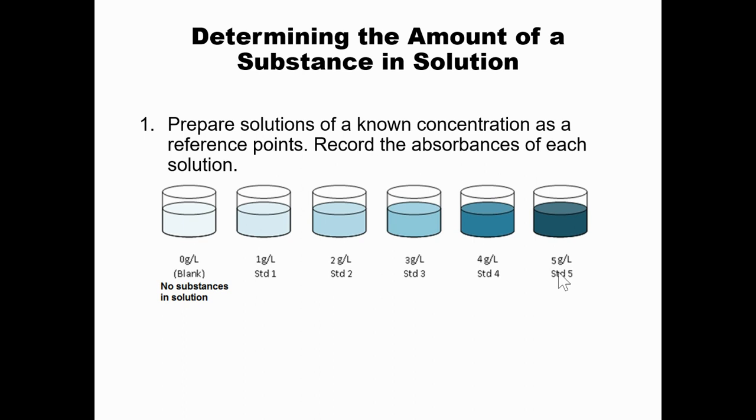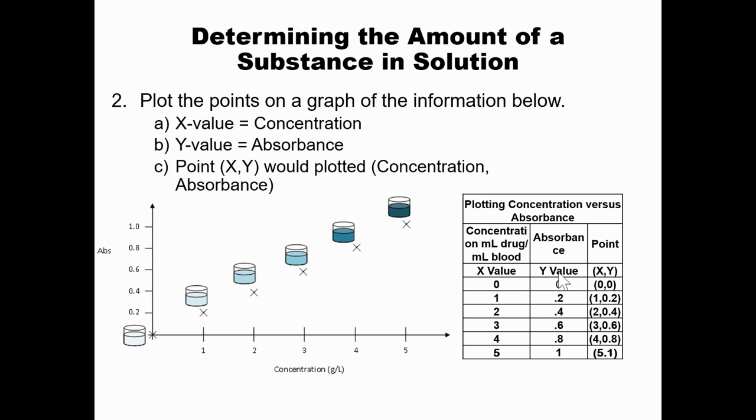So how are we going to determine the amount of substance in a solution? So like I said earlier, we prepare solutions of a known concentration, and we're using those as reference points. And we're going to record those absorbances in the solution. Then we have to plot those points. And remember that the x axis is at the bottom. And that's going to represent concentration. The y axis is absorbance. And that's going to represent how much was absorbed. And then we're going to plot the points. And remember, first, the first number is x. So you go to the right, so many, and then the second number would be y, and you would go up, however many you need to.